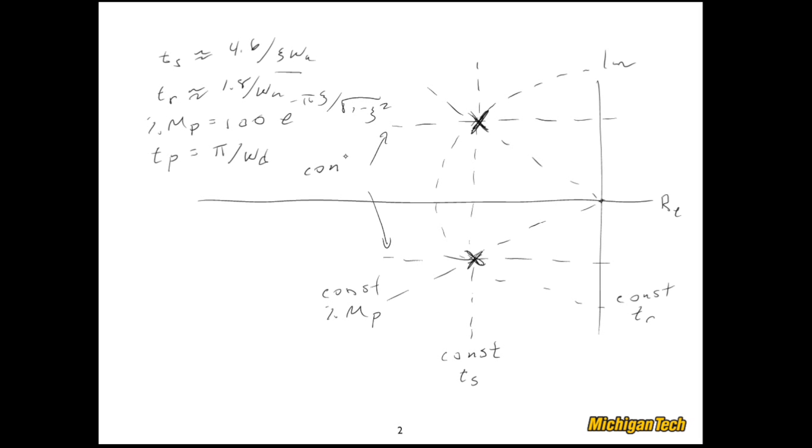And so that means that these lines are a constant Tp, time of the peak overshoot.